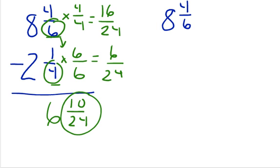8 and 4/6 minus 2 and 1/4. If I stop and think about the multiples of the denominators, and I say to myself, okay, I can't make 4 into 6 by multiplying. But what's the next multiple of 6? Well, the next multiple of 6 is 12. 6 times 2 is 12. I know I can make 6 into 12. Can I make 4 into 12? Yes, I can. I can make them both into 12.